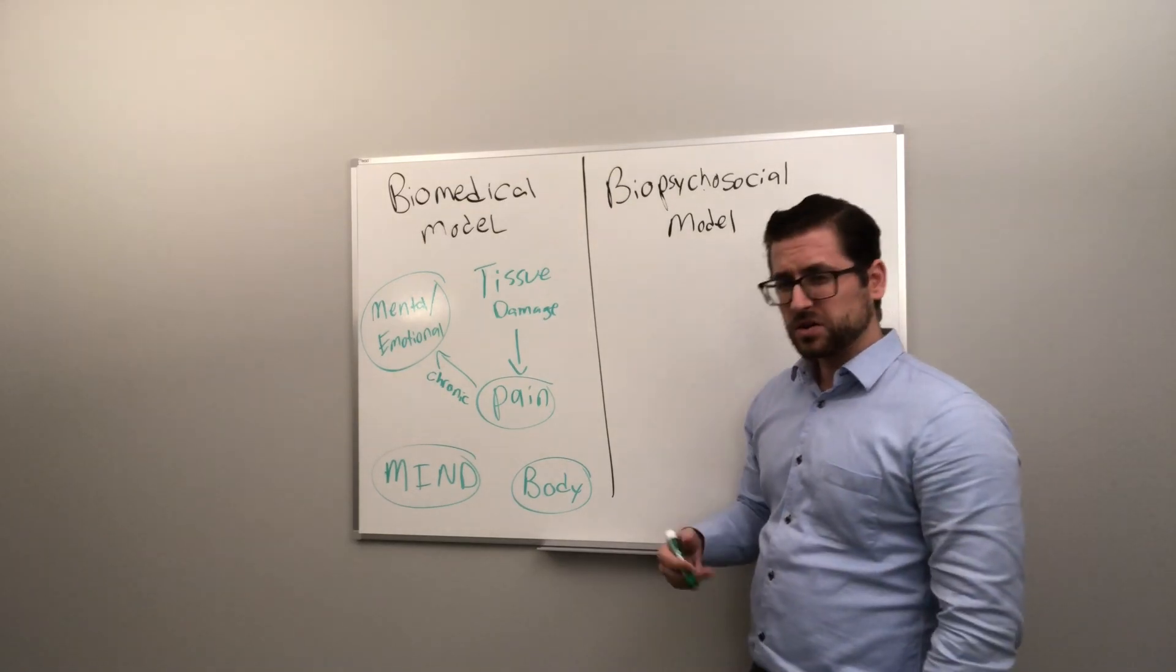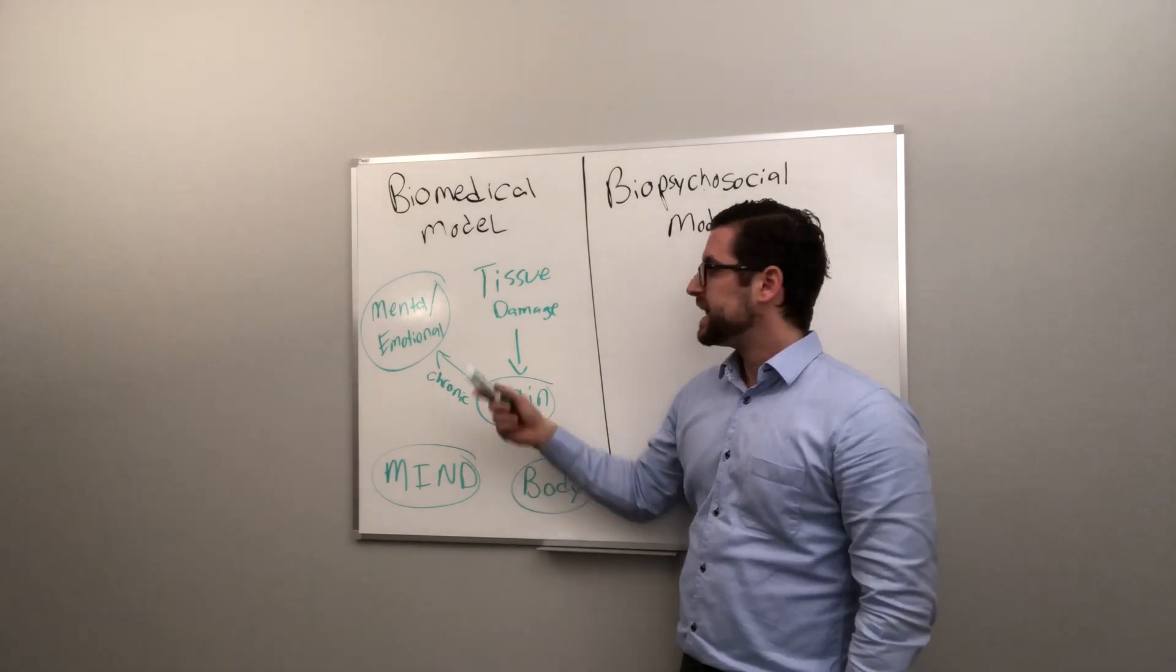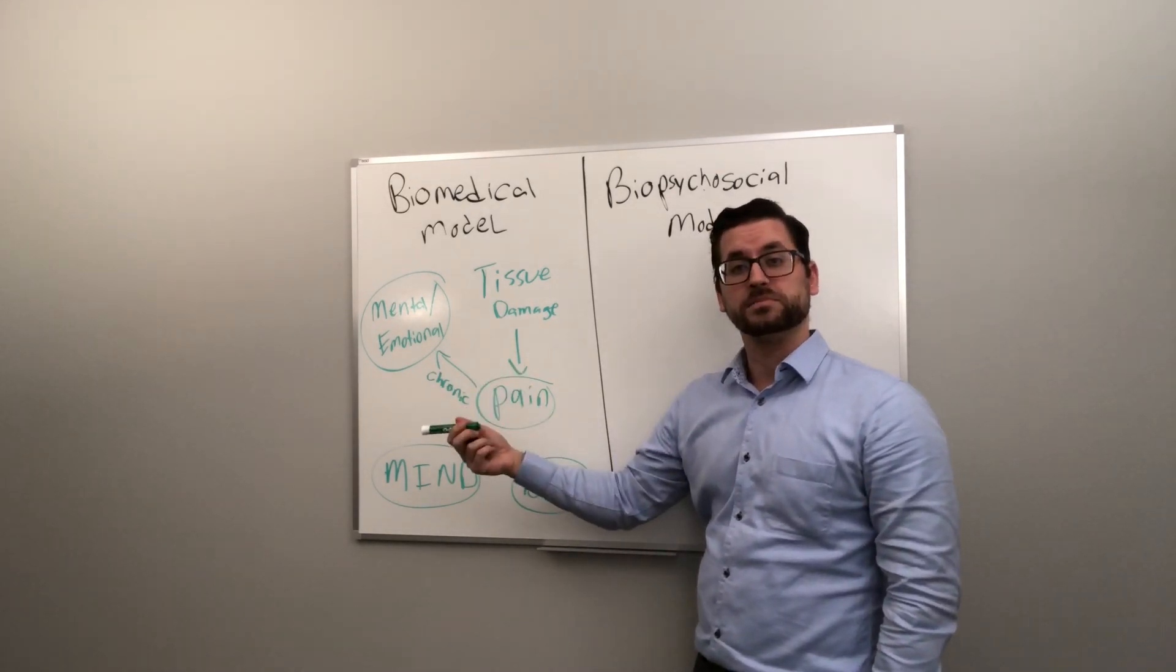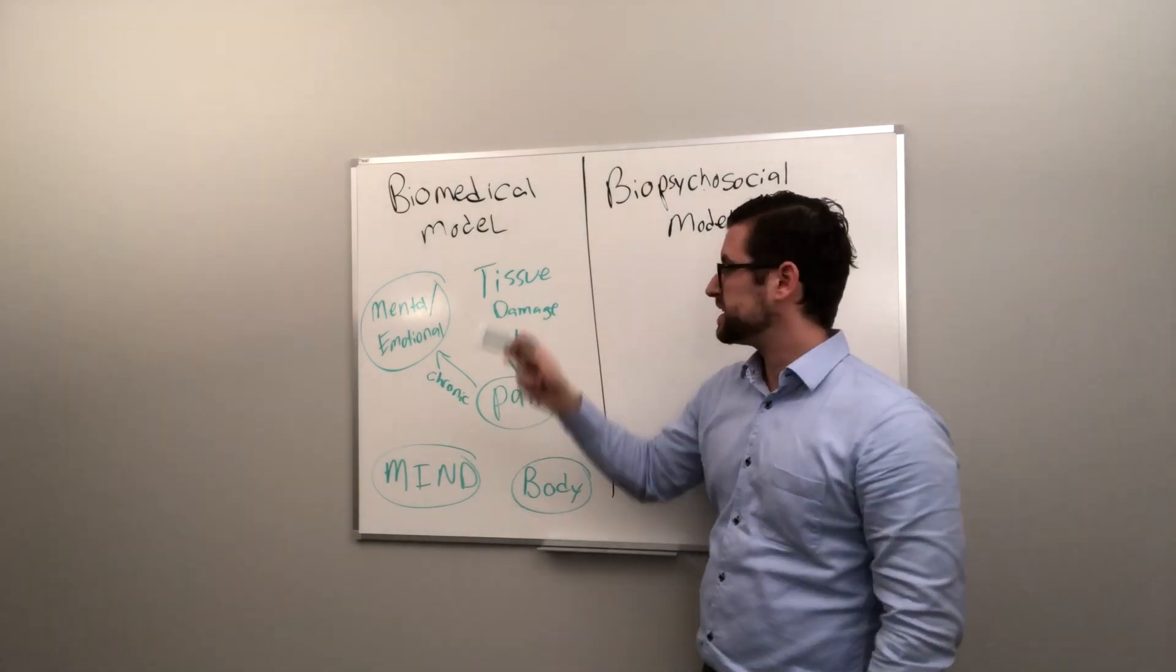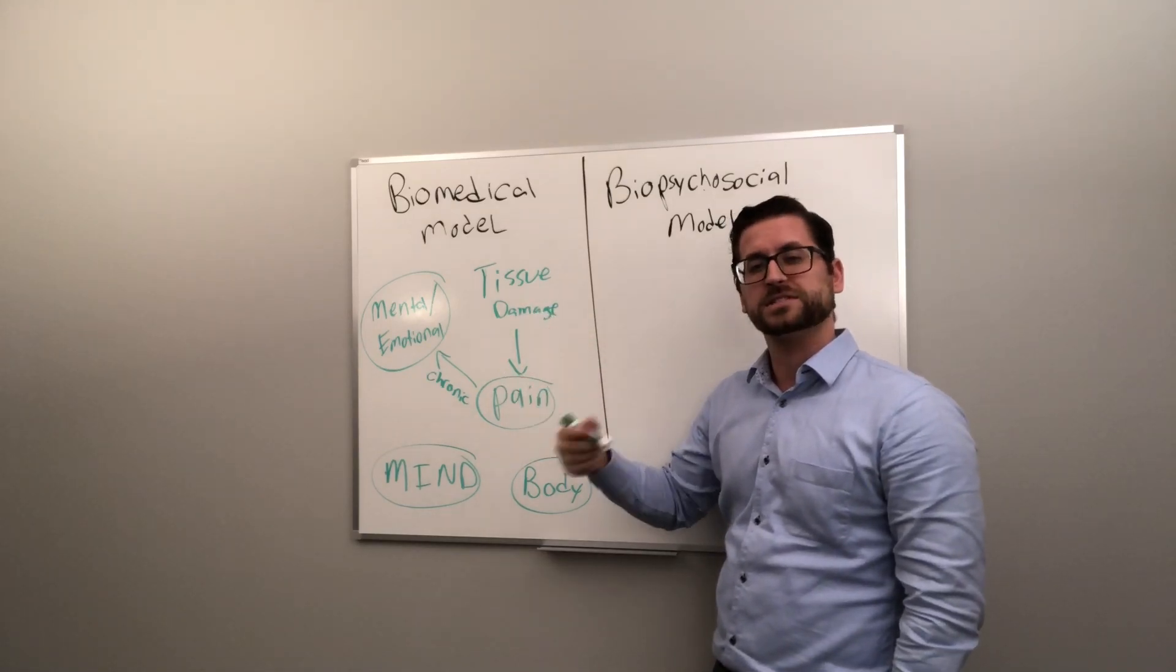The model also states as pain proceeds into chronicity it can cause mental and emotional problems. However, at the cause of it always comes back to the tissue damage, and the only way to get rid of tissue damage is through medical intervention.